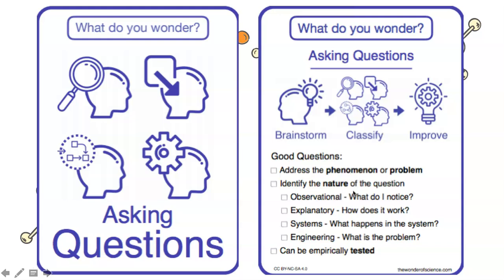Is it observational — what do you notice? Is it explanatory — how does it work? What systems are involved? Like with COVID-19, we have the system of the human body, the system of a city, the system of a country, or the system of the entire world. What happens in the system? You could focus on any of those systems and ask what happens in the body, city, country, or world. And finally, can your question be empirically tested? Can direct or indirect observations or experiences answer the question?